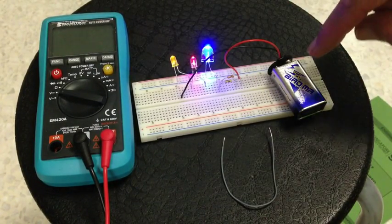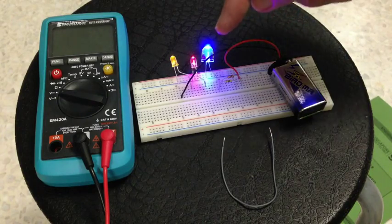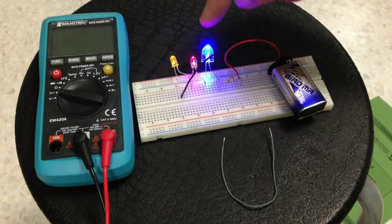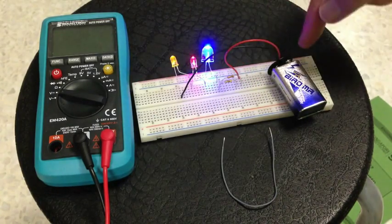The current is going from the plus through the red wire. Red wire is the plus. Through the resistor to the blue LED, the red LED, the yellow LED and back to the battery.